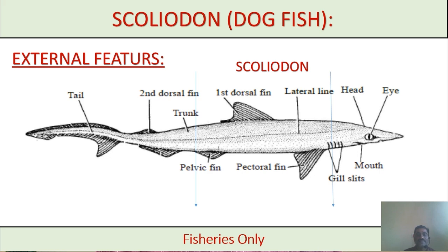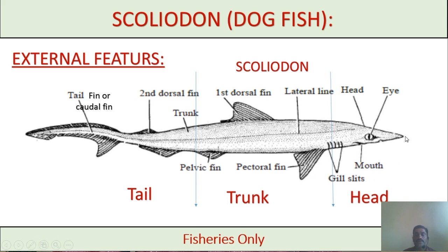The Scolidon body is divided into three parts: the head region, trunk region, and tail region. The head extends up to the gill slits. From the gill slits to the cloacal aperture is the trunk region, which is the largest part of the fish body. From the cloacal aperture to the posterior end is the tail region.